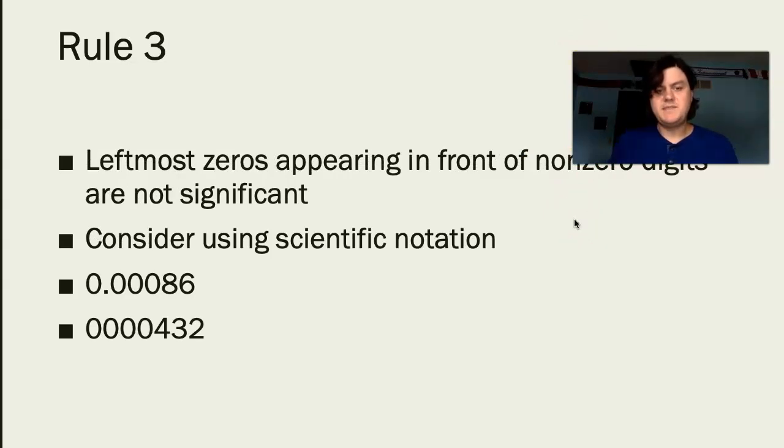Rule number 3 states that leftmost zeros appearing in front of non-zero digits are not significant. You can really think of these as placeholders. They are showing us where the measurement starts with significance. Here we have 0.00086. All four of those leftmost zeros are not significant. And then we don't normally write numbers like my second example, but I just wanted to be thorough here. There are four zeros before the number 432. In both of these cases, these leftmost zeros appearing in front of non-zero digits are not significant.